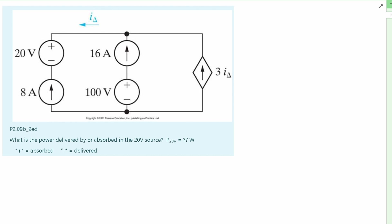We are given 20 volts to our left right here, 8 amps, 16 amps, and 100 volts, followed by a 3 times I delta.